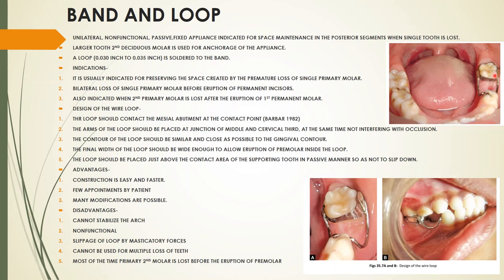Regarding the design of the wire loop: the loop should contact the mesial abutment at the contact point — as described by Barber in 1982. The arms of the loop should be placed at the junction of the middle and cervical third. The loop should not interfere with occlusion, and its contour should follow the gingival contour as closely as possible.